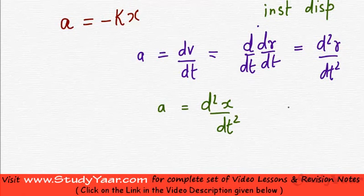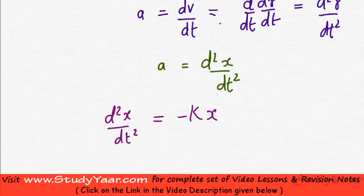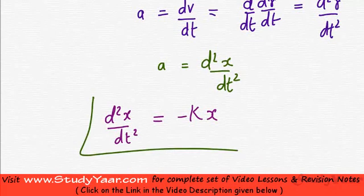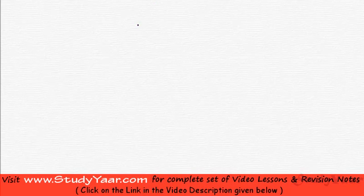So what I get if I put it over here is d²x/dt² equals minus kx. So you can see, this is a differential equation of second order. Now let's talk a bit about a second order differential equation.